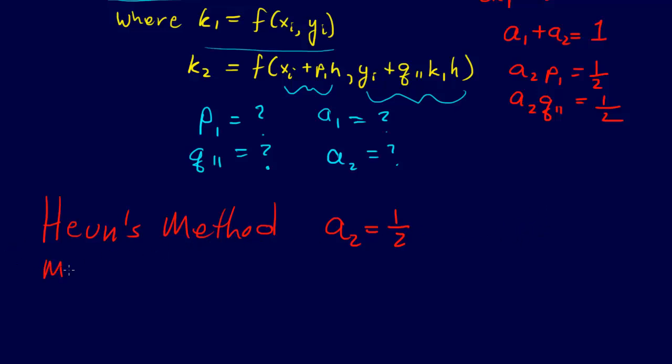The midpoint method, which is actually what the midpoint integration formula ends up being the same as—if we set a2 equal to 1, then we can see that a1 must equal 0, and then p1 equals 1/2, q11 equals 1/2.